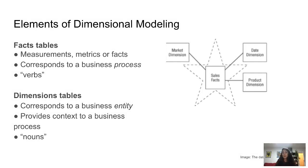The elements of dimensional modeling consist mainly of two types of tables: fact tables and dimensional tables — also known as the star schema. Fact tables contain measurements, metrics, or facts about the business; they correspond to a business process and can be thought of as verbs, like sales or orders. Dimensions provide context to these fact tables, correspond to business entities, and can be thought of as nouns — like customer or product.